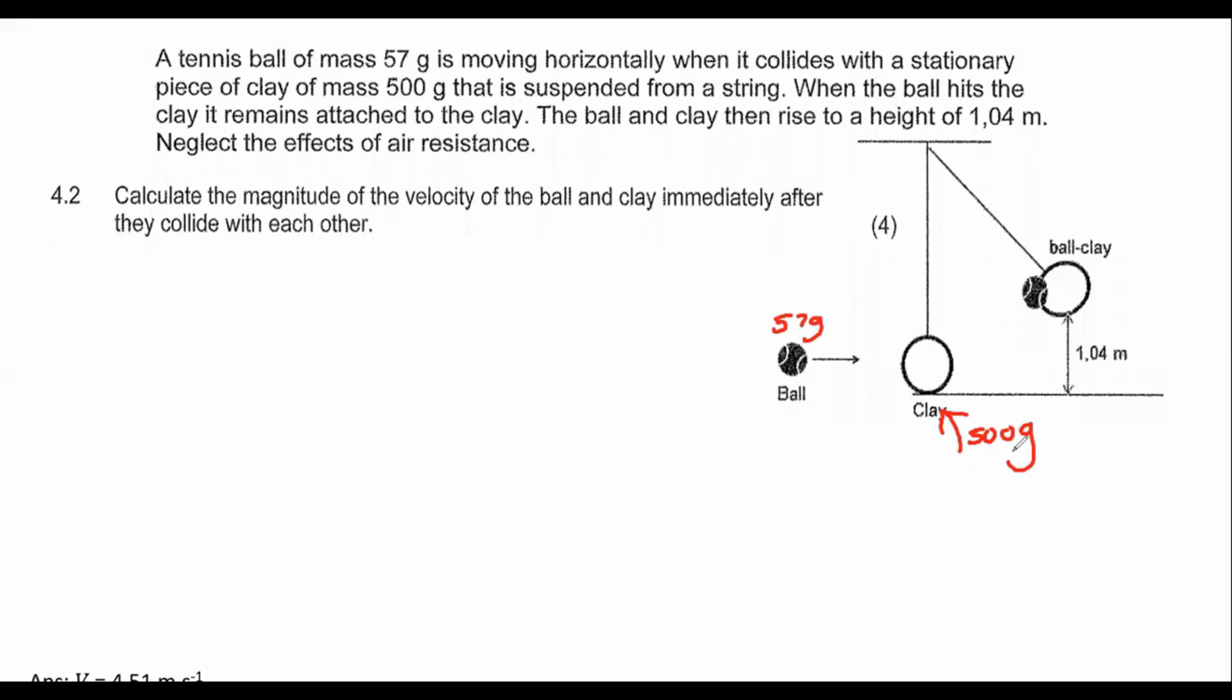First question: calculate the magnitude, which means the size, of the velocity of the ball and the clay immediately after they collide with each other. At first glance, you might be tempted to want to use the conservation of linear momentum formula, M1V1 initial plus M2V2 initial equals M1V1 final plus M2V2 final.